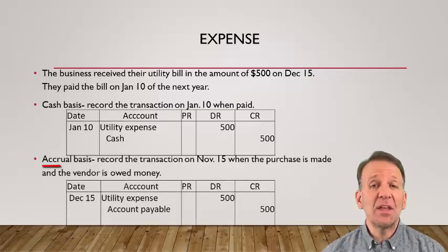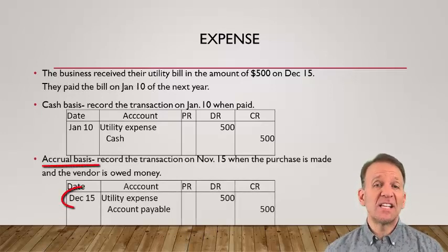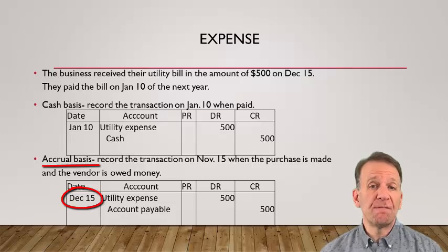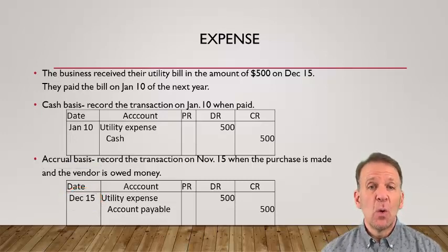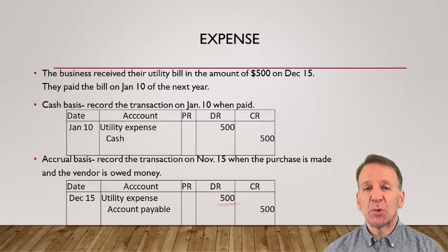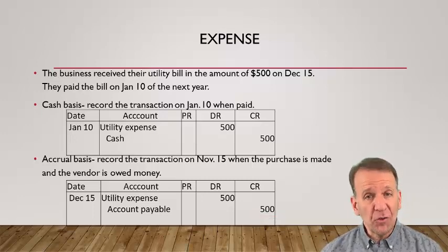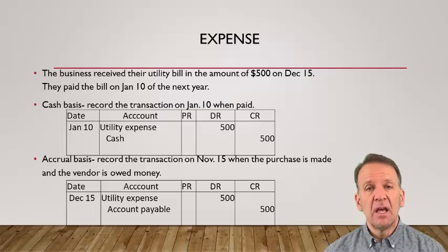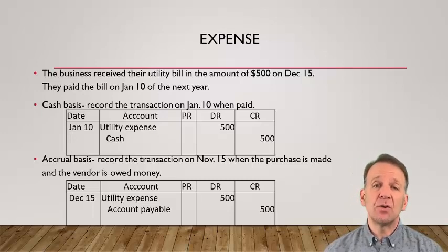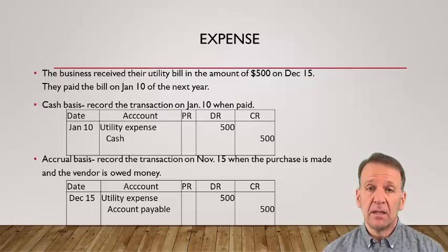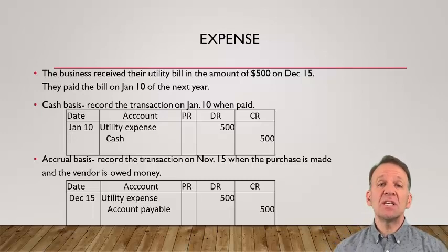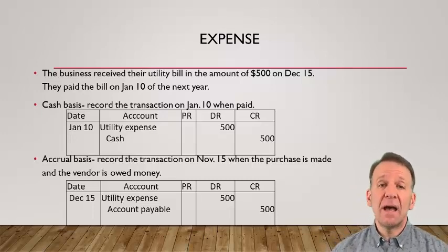Let's take a look at the accrual basis. On December 15th, we would record the following: debit utility expense $500 and credit accounts payable $500. This records the expense and also records the liability — it shows that we owe $500 to the utility company. Later, when we pay the utility company, we will debit accounts payable and credit cash $500.